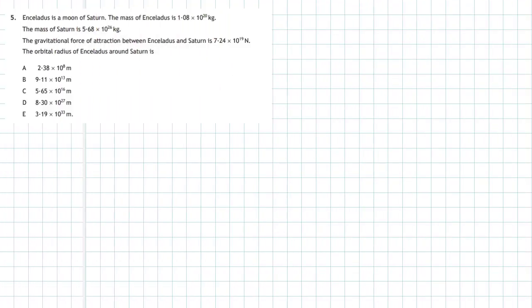Question 5 from section 1 of the 2018 Higher Physics exam. Enceladus is a moon of Saturn. The mass of Enceladus is 1.08 times 10 to the power of 20 kilograms. The mass of Saturn is 5.68 times 10 to the power of 26 kilograms. The gravitational force of attraction between Enceladus and Saturn is 7.24 times 10 to the power of 19 Newtons.